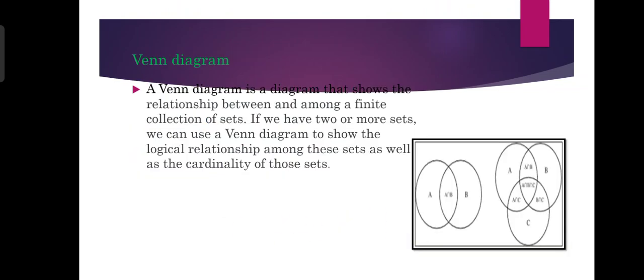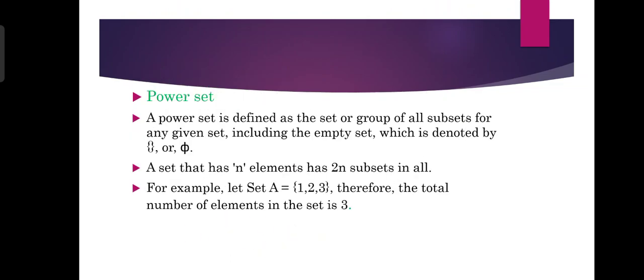Without much delay, let's start with power set. A power set is defined as the set or group of all subsets for any given set, including the empty set, which is denoted by the flowery bracket or phi. So a power set is a set or group of all subsets. A set that has n elements has 2^n subsets in all.